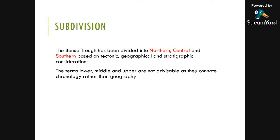The terms lower, middle, and upper are not advisable because in geology these are stratigraphic terms — someone unfamiliar would interpret them as indicating age, implying the lower Benue Trough is older than the upper, which is not true. These were actually geographical terms: upper meaning north, middle meaning central, lower meaning south. It is better to use the proper geographic terms — northern, central, and southern — a distinction based on tectonic, geographical, and stratigraphic considerations, even though there is continuity across all three parts.